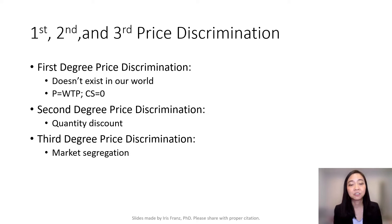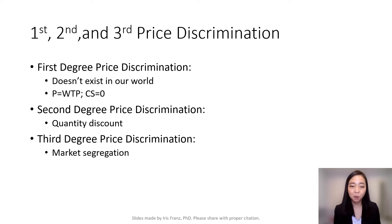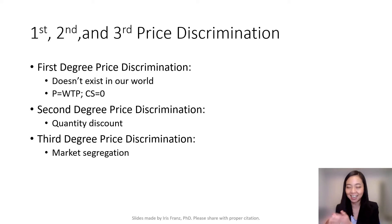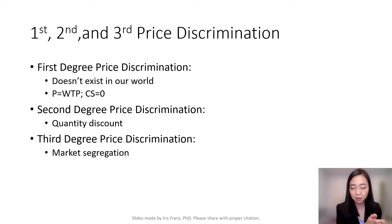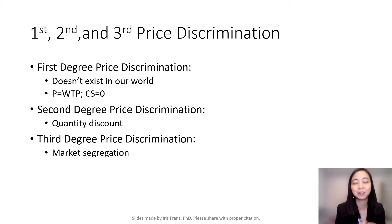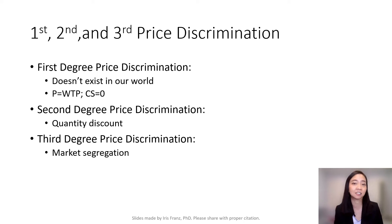The third degree price discrimination is market segregation. The firm is going to separate consumers into an elastic group and an inelastic group. If you are in the elastic group, that means you care a lot about the price, so the firm is going to charge you a lower price. But if you belong to the inelastic group, the firm is going to charge you a higher price.